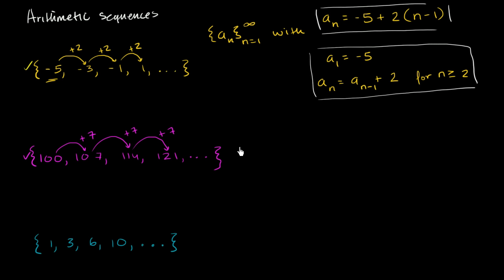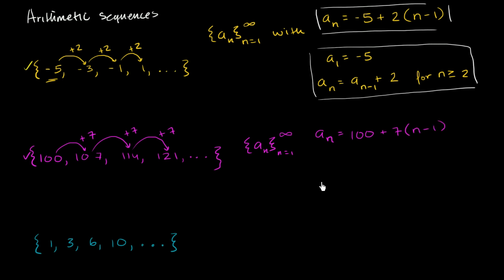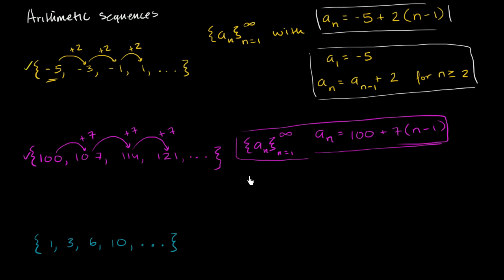We could write this as the sequence a sub n, from n equals 1 to infinity. If we wanted to define it explicitly, a sub n is equal to 100 plus 7 times (n minus 1). The second term adds 7 once, the third term adds 7 twice, so for the nth term we add 7 a total of n minus 1 times. This is an explicit definition.